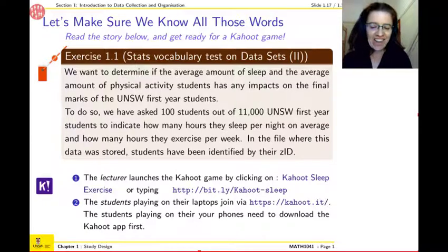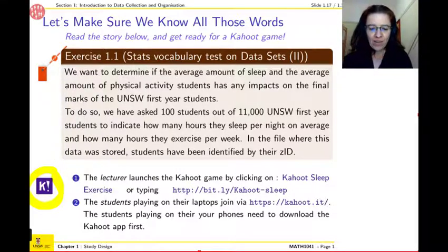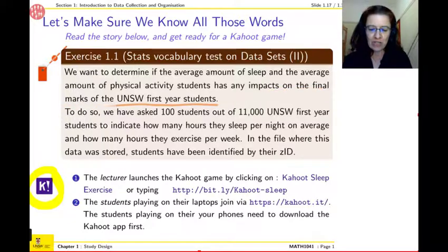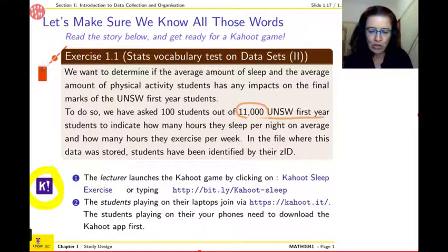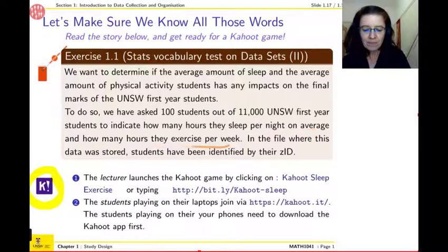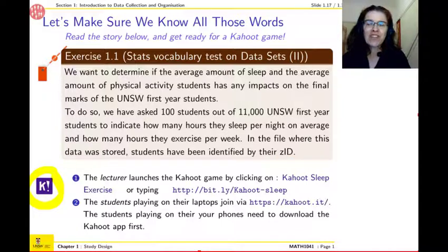So before we can play, I need to tell you what the story is. So that's going to be a Kahoot which is going to be related to that story. So the question we have is that we want to determine if the average amount of sleep and the average amount of physical activity that students have impact the final mark for UNSW first-year students. So to do so, we have asked 100 students out of the 11,000 UNSW first-year students to indicate how many hours they sleep per night on average and how many hours they exercise per week. And then this data was stored in a file and students have been identified by the ZID. OK, you pull out this piece of paper. You are ready to write question one and write the corresponding color and I start the game.